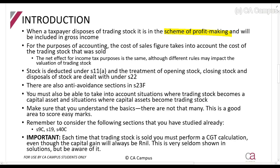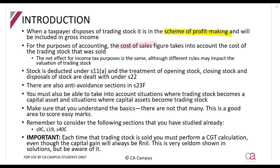The tax act basically calculates a cost of sales using tax rules. For accounting, you account for trading stock when you sell it in the cost of sales figure, but for tax we don't use the same cost of sales figure. In accounting you recognize trading stock at the lower of cost or net realizable value, whereas in tax we don't have net realizable value — we just have market value.